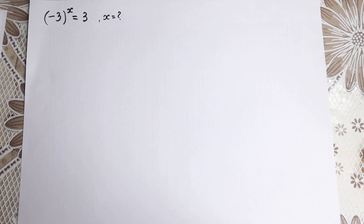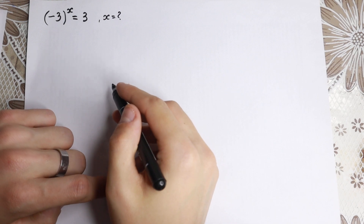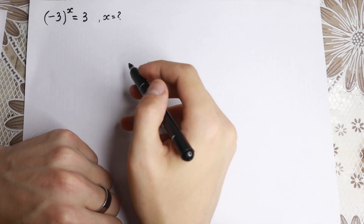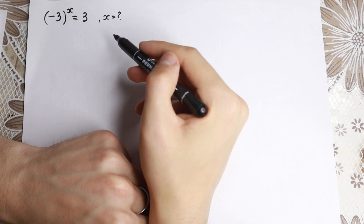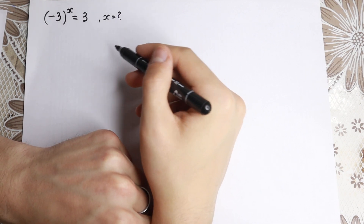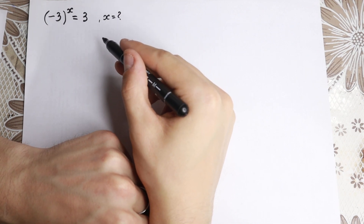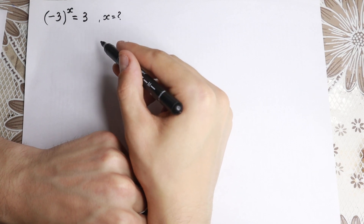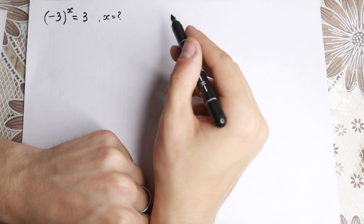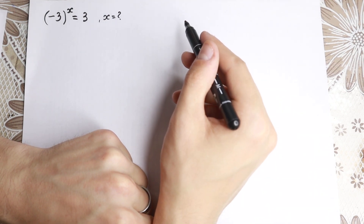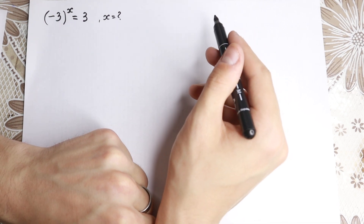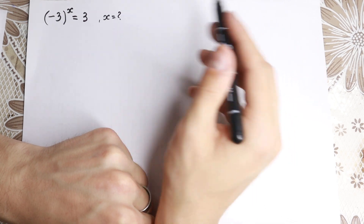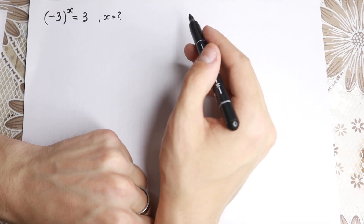Hello my friend! Happy to see you here — really interesting tricky Olympiad question today. Minus 3 to the x equals 3. This looks like a weird question because we have a minus, it's maybe a little bit complicated. But I wanted to show you how we can solve it, how we can prove about roots, how we can find complex roots — all roots right here. I hope you will enjoy this video.